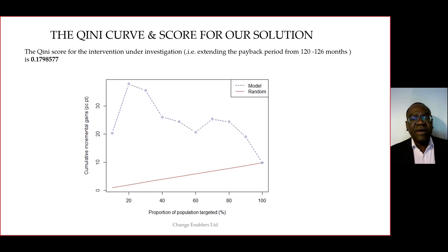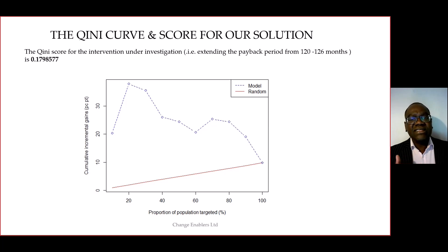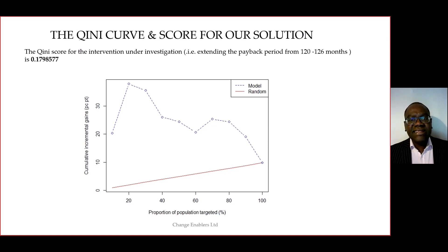One final thing to mention: because it's a prediction problem, we're using the predicted uplift score for each case or each customer. It's recommended that we split the data into a training set, which we use to build the model, then use a test set to predict the uplift. It is this predicted uplift that we use to create our Qini curve, to prevent overfitting.